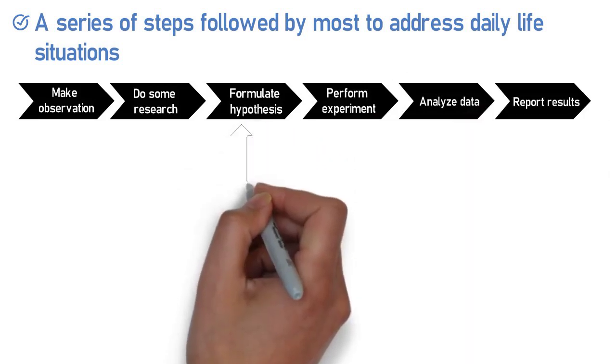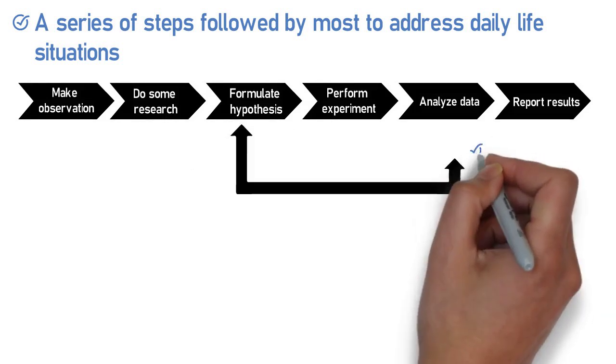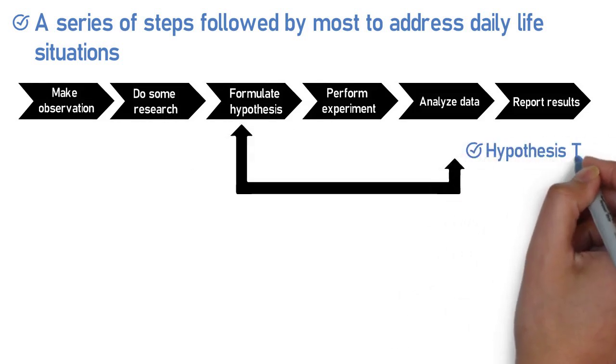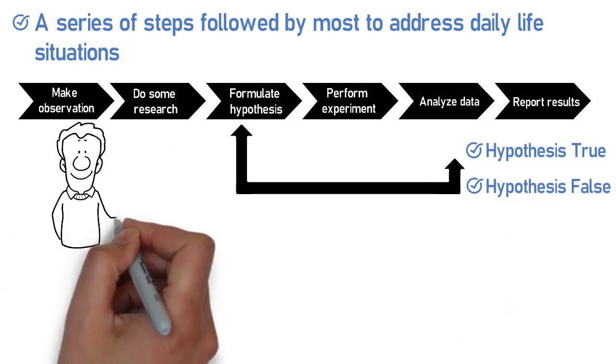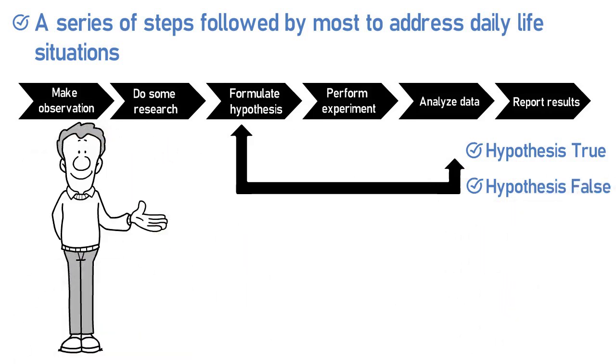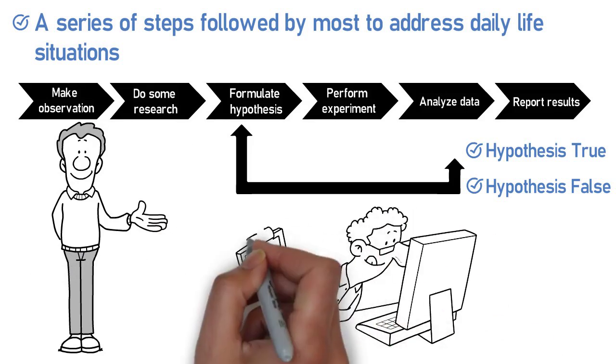Should the data analysis step disprove the hypothesis, the scientist or individual following the steps could reformulate the hypothesis and try a new experiment. However, disproving a hypothesis is not always a bad thing and those results should also be reported.